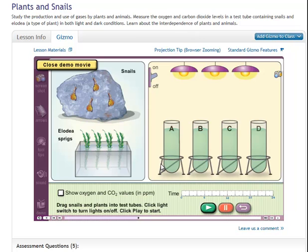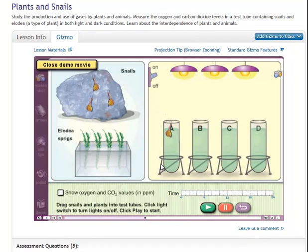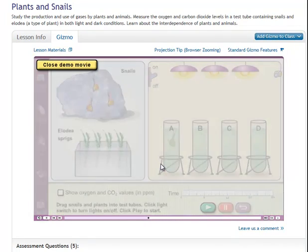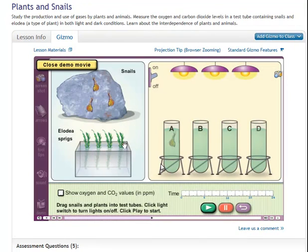When you're ready to begin, drag some plants and snails into the tubes. You can set up the test tubes however you like. Notice that in this case, Tube D has a plant and a snail in it, while Tube C has nothing.